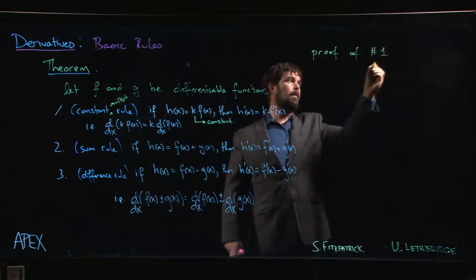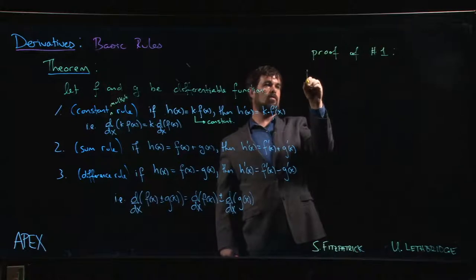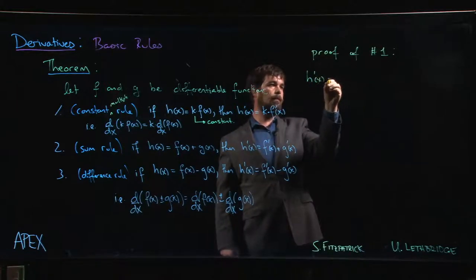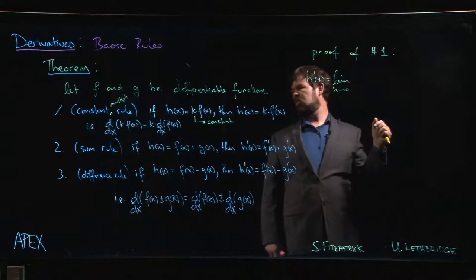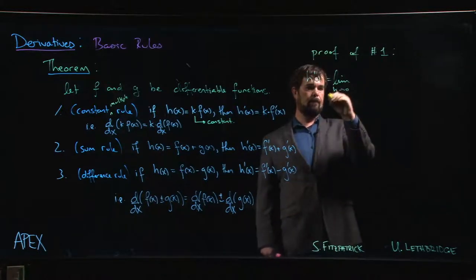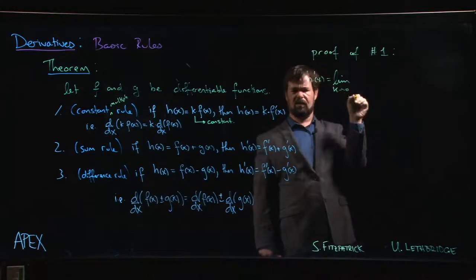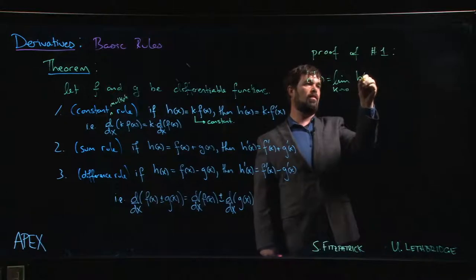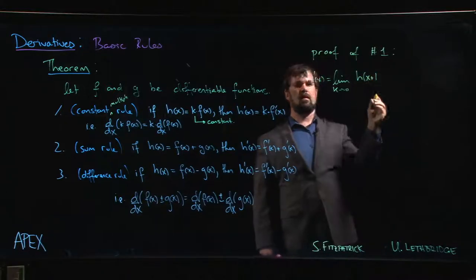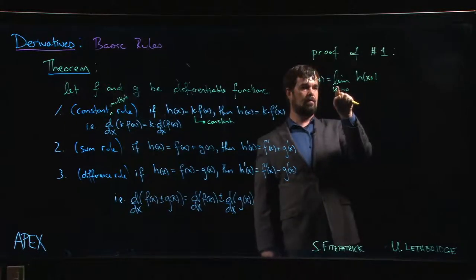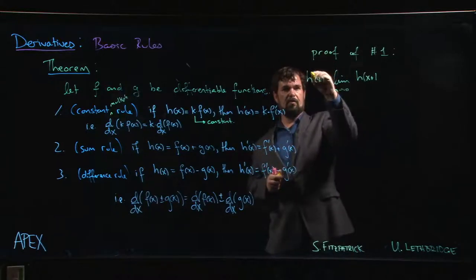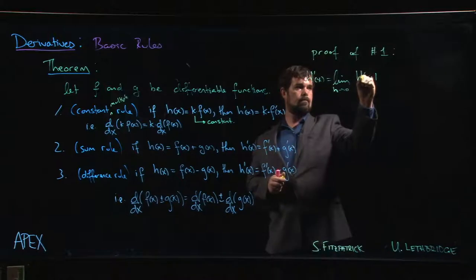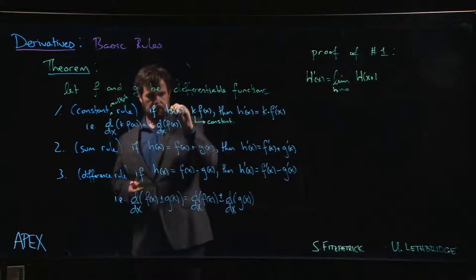So as usual, H prime of x is the limit as h going to 0... oh, I shouldn't have used h. Let's call this k. K going to 0 - you don't like to have two different h's. H shouldn't mean two different things. H of x plus... oh, but I have a k as well. Okay, that should be h. We need a new name for our function. Let's just make it a capital H. That should save the day.